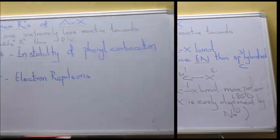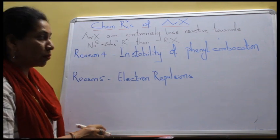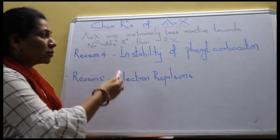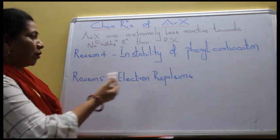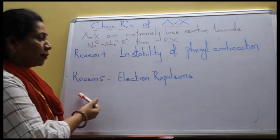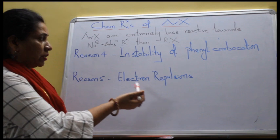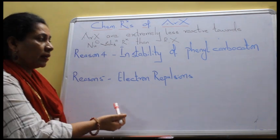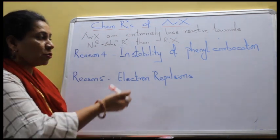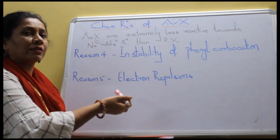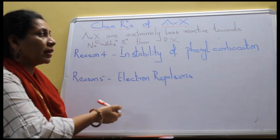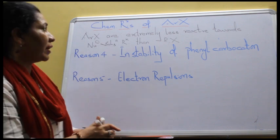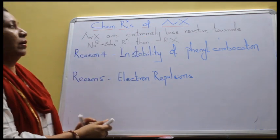The fourth reason for extremely low reactivity is the instability of the phenyl carbocation, because of which it is not formed in the reaction mixture. And the fifth reason is electron repulsion — haloarines rings are highly rich in electrons, so an electron-rich nucleophile does not easily attack on it.